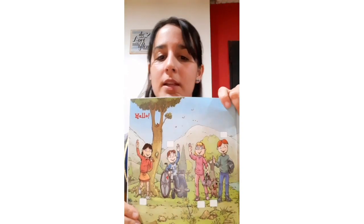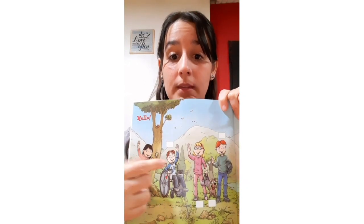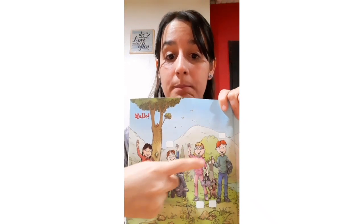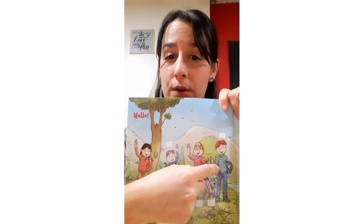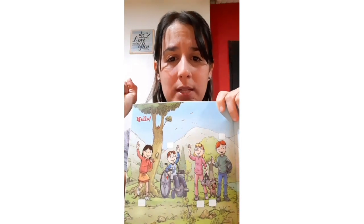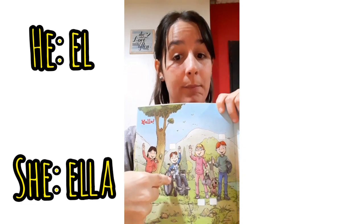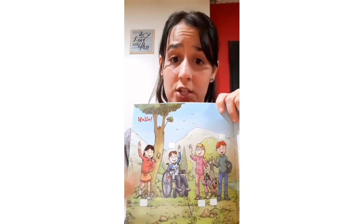Look at this. These are the characters of the book. She is a girl. He is a boy. She is a girl. He is a boy. ¿Se acuerdan que habíamos incorporado dos palabras nuevas? Habíamos dicho que he era él y she era ella.